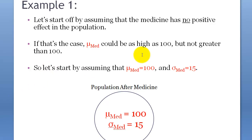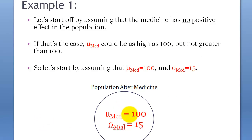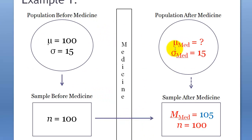Let's start by assuming the medicine has no positive effect in the population. If there's no positive effect, that five-point difference is going to be insignificant — that's what we're trying to prove. So let's suppose the medicine had no positive effect; that means mu_med could be at most 100 but no greater. We start by assuming mu_med = 100 and sigma_med = 15.